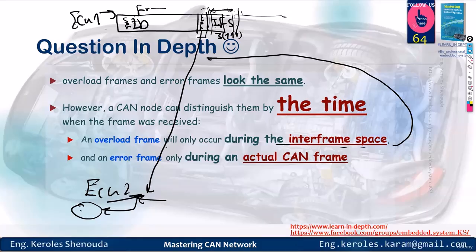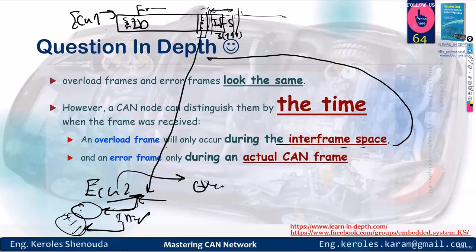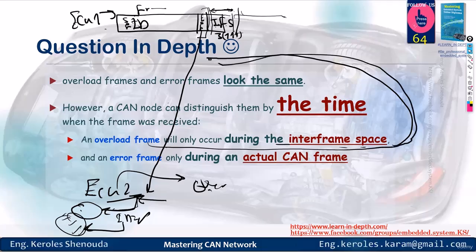This is where time plays a part. If it's an overload, it interrupts the IFS, which are the three bits of ones that separate the frames. If it's an error frame, then no, it's treated like a regular frame. It waits for the bus to complete the three IFS bits and then it's transmitted. Do you all understand now how we differentiate between the overload frame and the error frame?